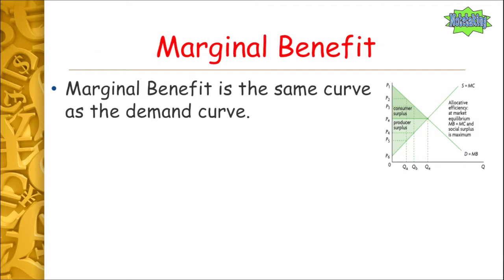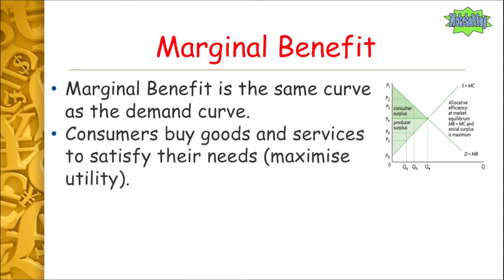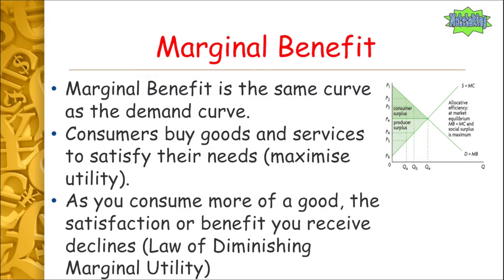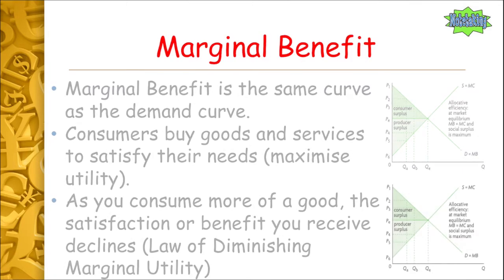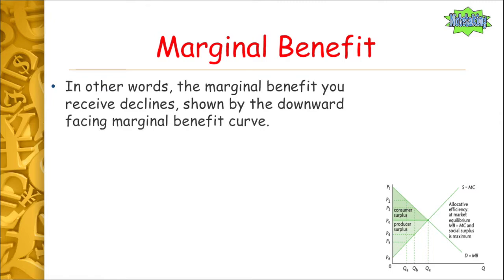So let's show what marginal benefit is on a diagram. It is indeed the same curve as the demand curve. We know already consumers buy goods and services to maximize — to satisfy their needs, or in other words, to maximize utility and get the most satisfaction that they can. The more you consume of a good, the satisfaction or benefit you receive from that declines. We saw this already when we looked at the law of diminishing marginal utility — the more you consume of a unit, the less enjoyment you get. So therefore, the more you consume of a good, your satisfaction or benefit declines, and therefore we would have a downward facing curve.